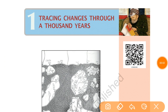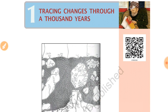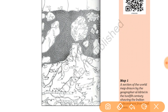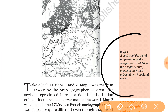Hello students, today I am going to discuss Chapter One from your history book. The name of the chapter is 'Tracing Changes Through a Thousand Years.' First, a map is given here — it is a section of the world map drawn by geographer Al-Idrisi in the 12th century, showing the Indian subcontinent.